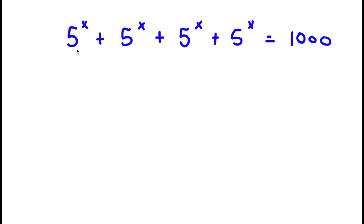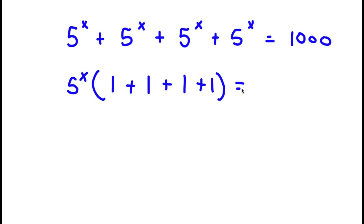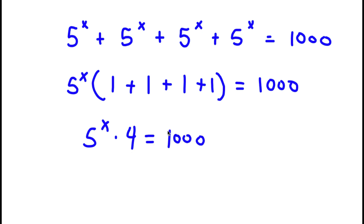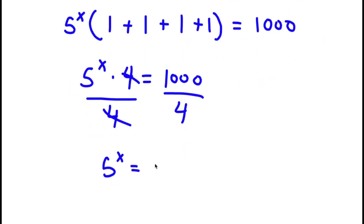In this problem, I have 5 to the power of x, plus 5 to the power of x, plus 5 to the power of x, plus 5 to the power of x, plus 5 to the power of x, equal to 1,000. I'm going to factor out 5 to the power of x from the left-hand side. Each term divided by 5 to the power of x gives 1, so I have 5 to the power of x times 1 plus 1 plus 1 plus 1 plus 1, equals 1,000. Simplifying the parentheses gives 5, so 5 to the power of x times 5 equals 1,000. Dividing both sides by 5, I get 5 to the power of x equals 250.